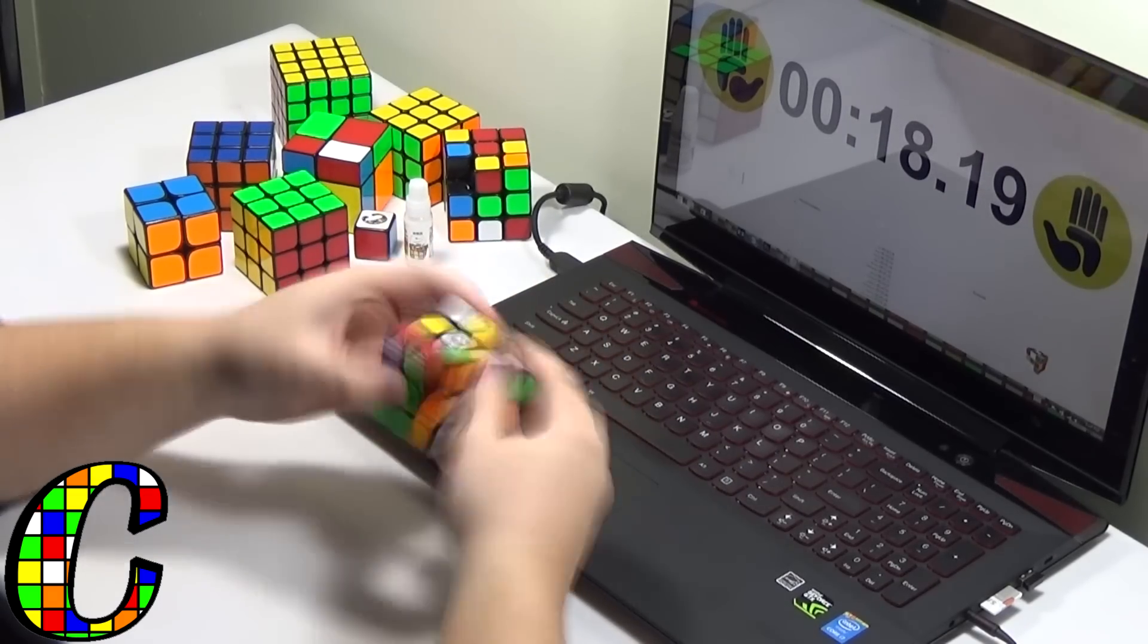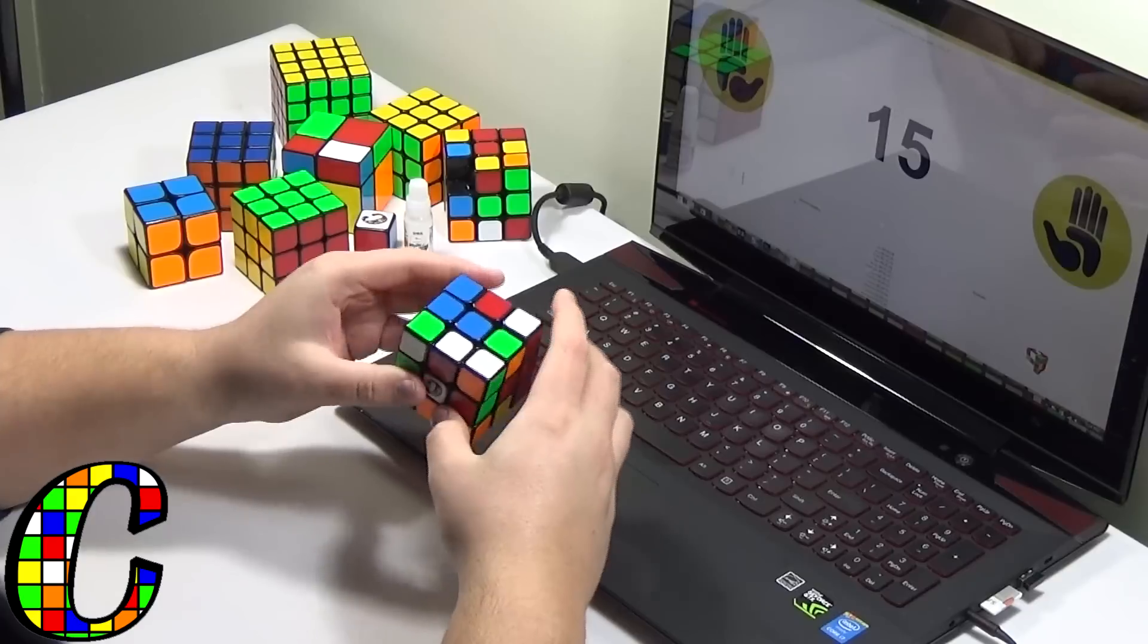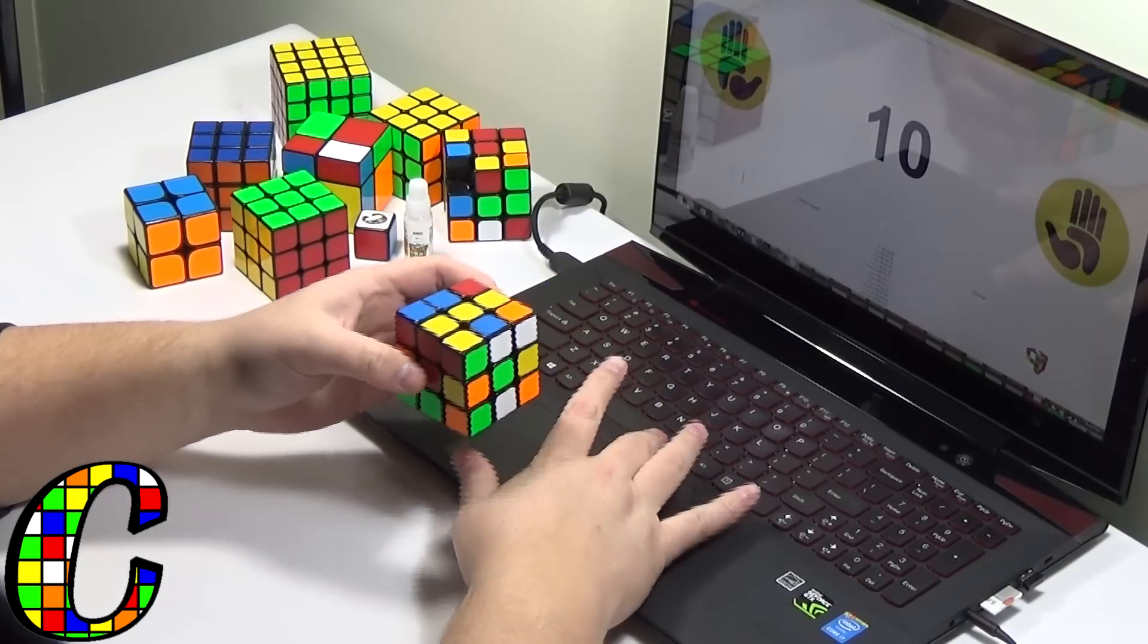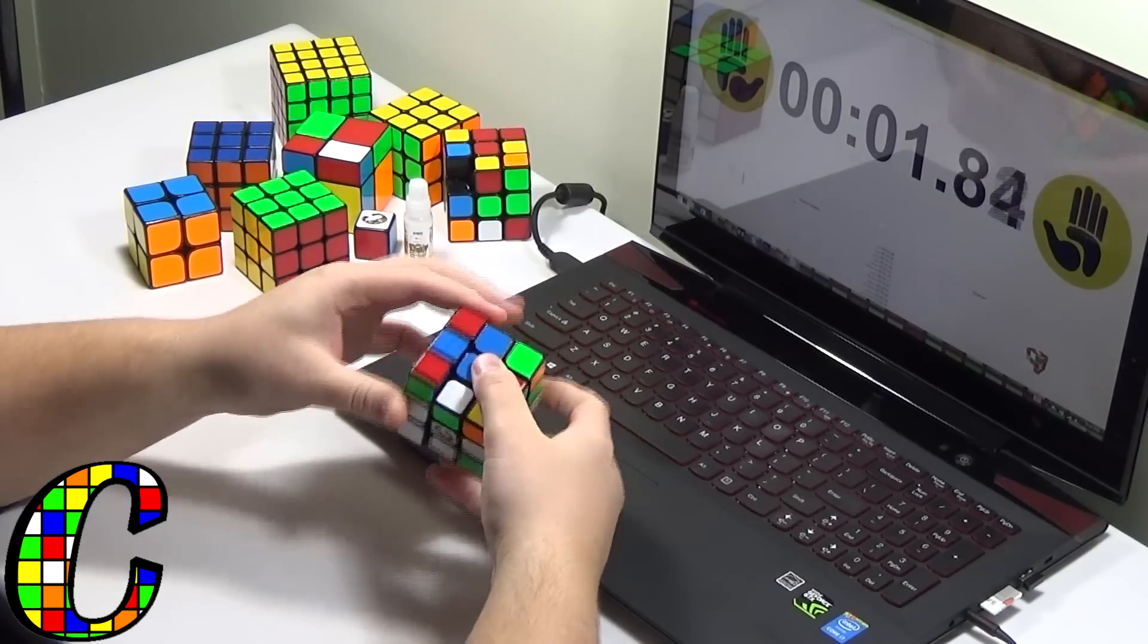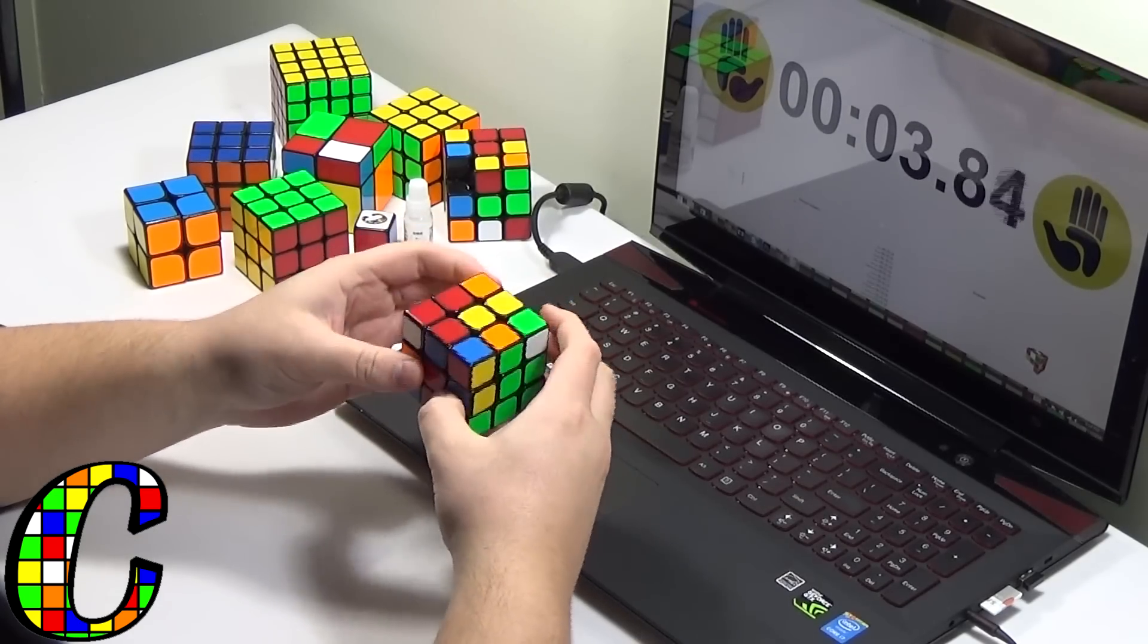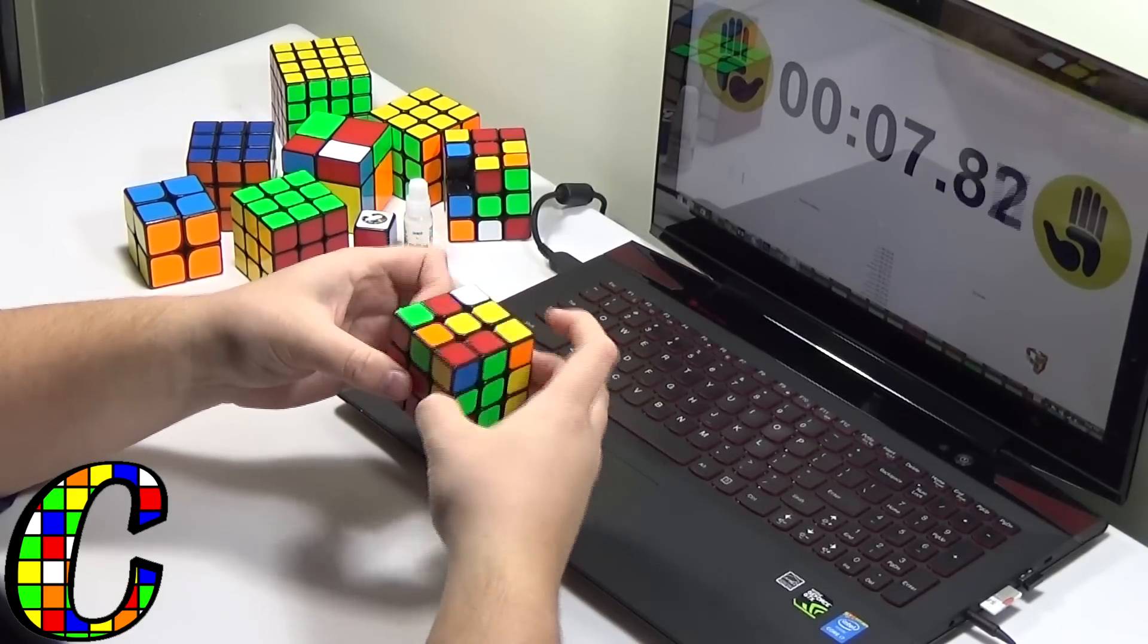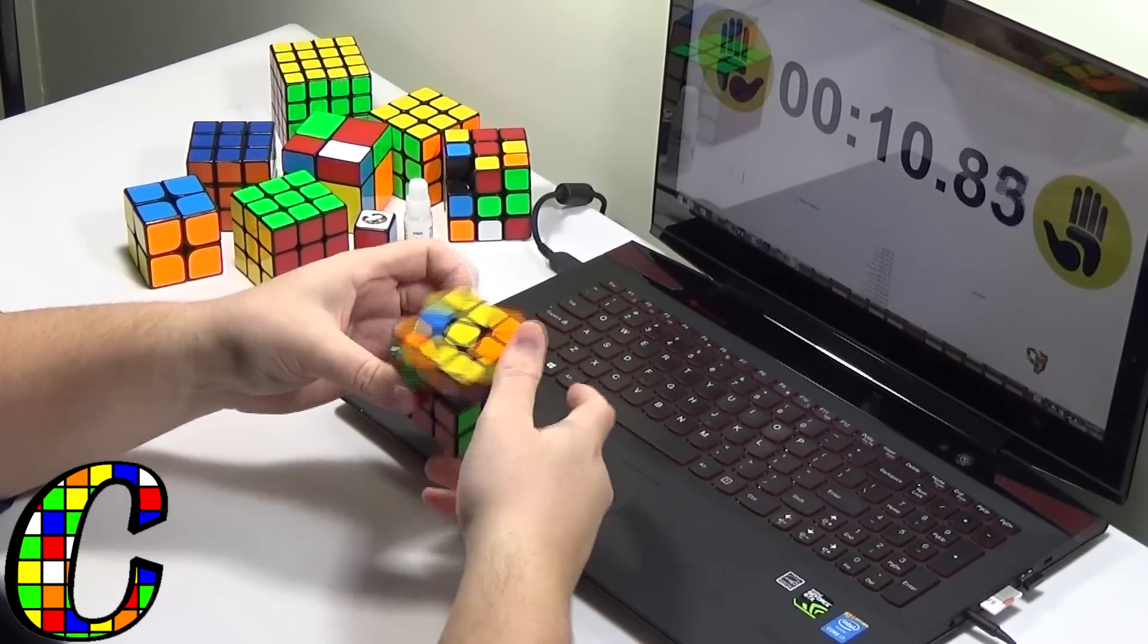I show you guys a lot of solves in Road to Sub 20, but this is actually some of my best as far as average of 5 goes. My old PB average of 5 was an 18.24, and this is an 18.21. I didn't do too much improvement, but anytime I get a PB I'm excited.